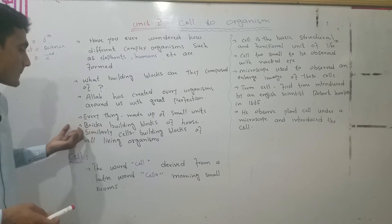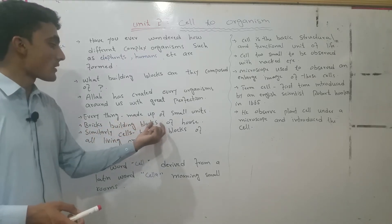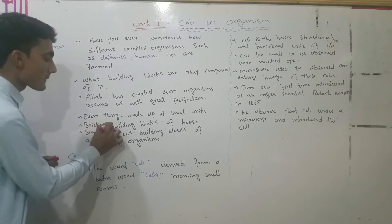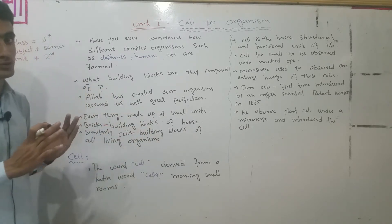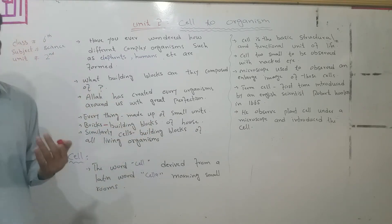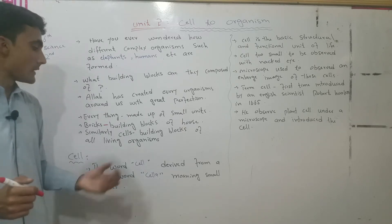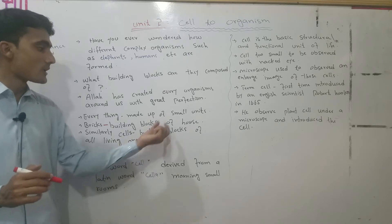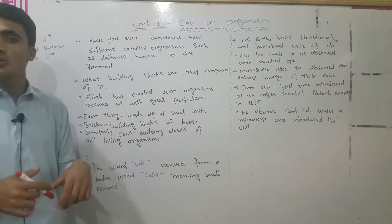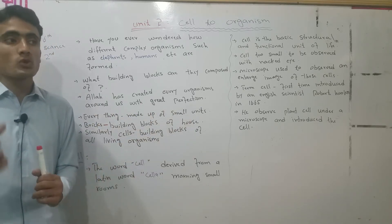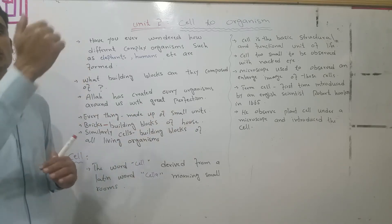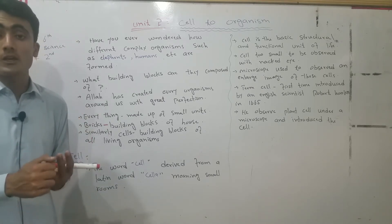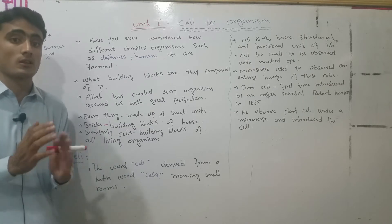Building blocks — for example, the building blocks of a house are bricks. Just as individual bricks come together to form a house, this is the unit of construction. If you look at a wall, you can see the bricks. Similarly, cells are like the bricks of living organisms.